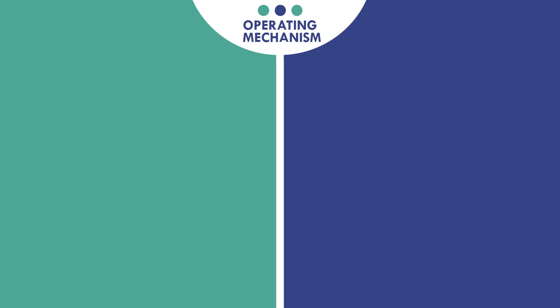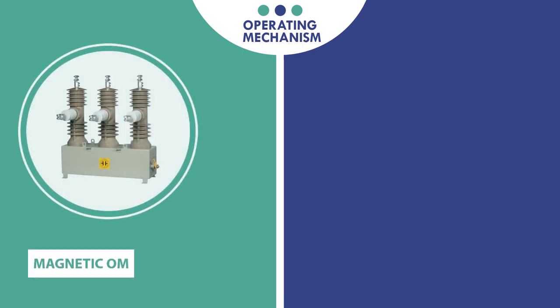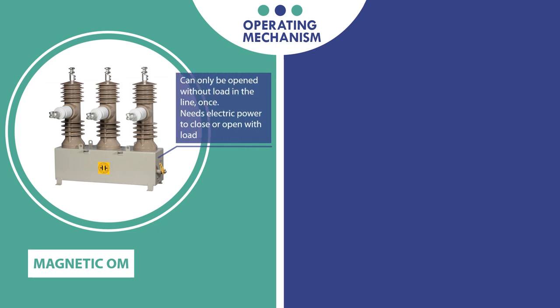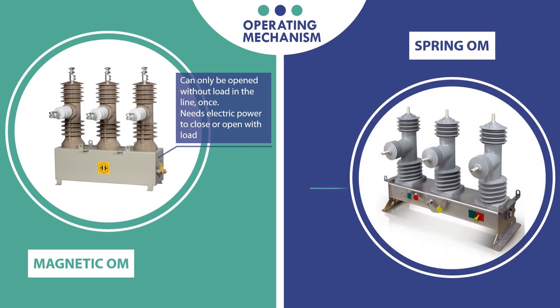Let's move to the third factor in choosing a right recloser: operating mechanism. Here we have two main types: magnetic and spring operating mechanisms. In general, magnetic operating mechanism can only be opened without load in the line. Also, it needs electrical power to close or open with load. For spring operating mechanism, you can perform trip-close-trip under full load in your line and it can be operated and manually recharged.